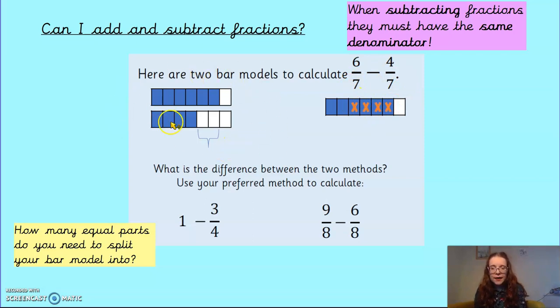Here, I've got two bar models, two bar groups split into 7 because that's my denominator. And this one, I've coloured in 6 of them. And on the second one, I've coloured in 4. And then I've had a look at the difference between them. And that is 2.